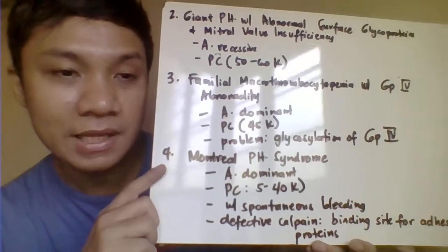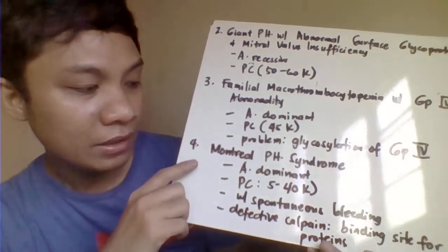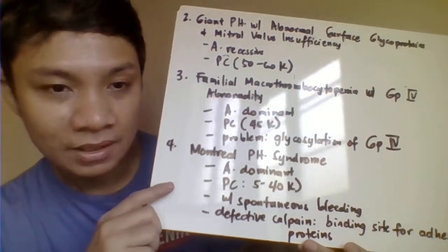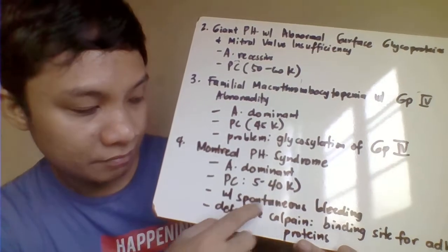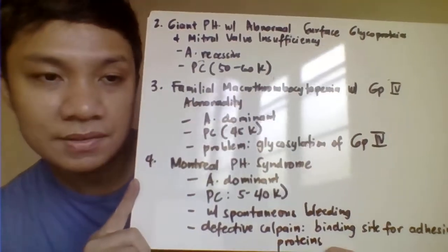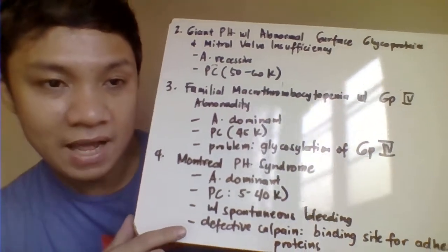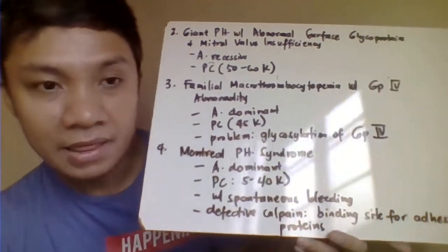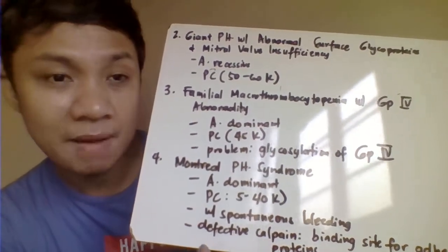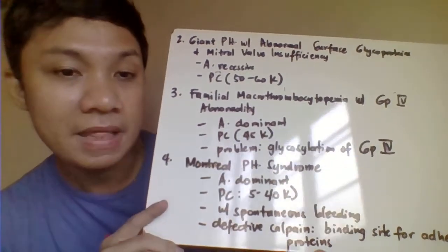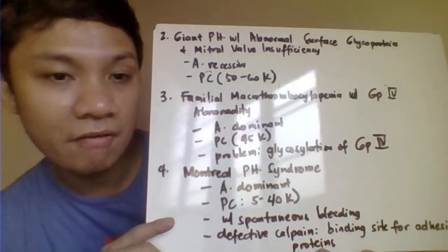Next is Montreal platelet syndrome. This is inherited as autosomal dominant and has the lowest platelet count — only 5 to 40,000. It is characterized by spontaneous aggregation and by defective calpain. Calpain is a protein found in the receptor membrane of platelets which serves as a binding site for adhesive proteins like fibronectin.